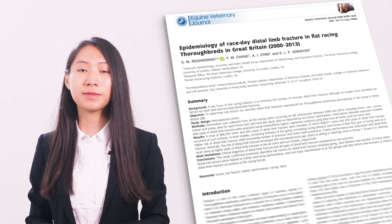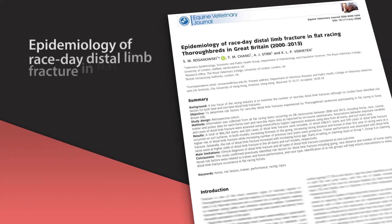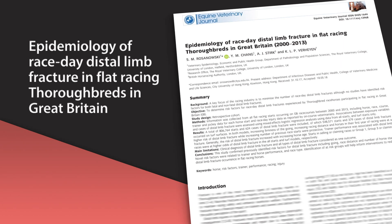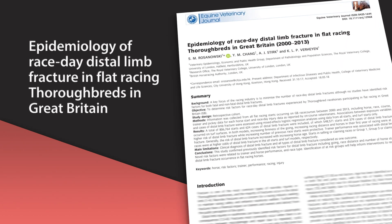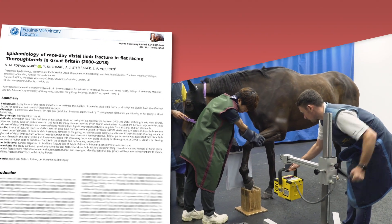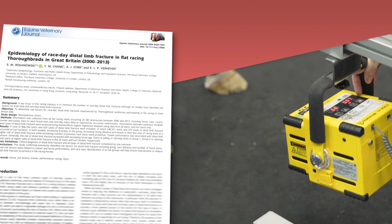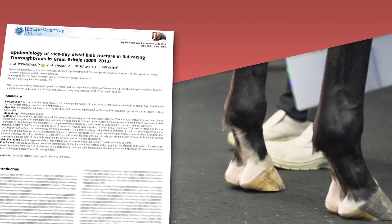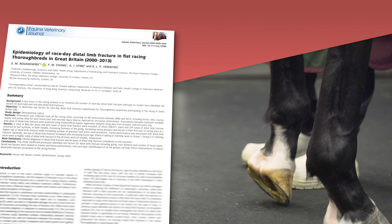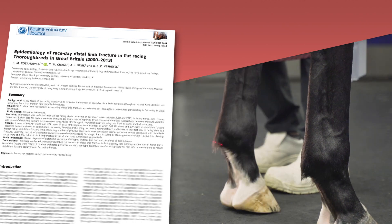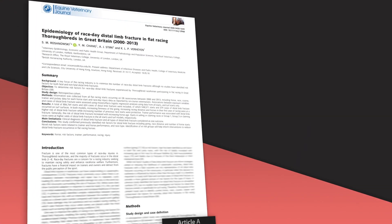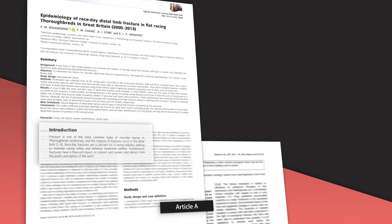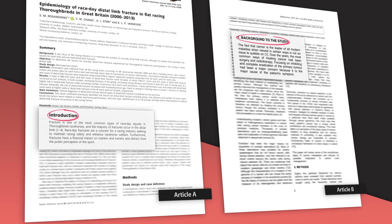Many of the examples will come from this article: 'Epidemiology of Race Day Distal Limb Fracture in Flat Racing Thoroughbreds in Great Britain.' To recap, the topic is a kind of injury which can occur in racehorses — fractures in the distal limb. The purpose of the study is to find out whether injuries like this happen more often under certain circumstances. Section headings can be worded in different ways; for example, this is called 'Introduction,' but this one is called 'Background to the Study.'